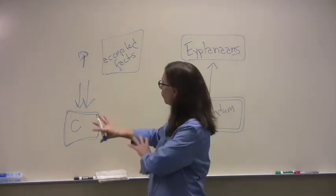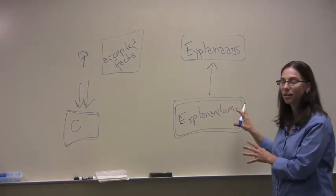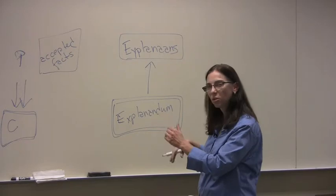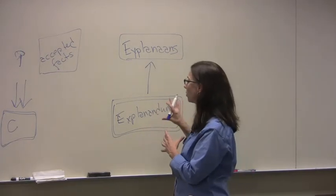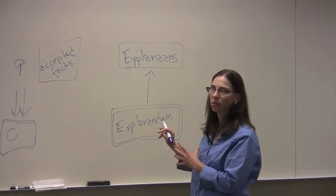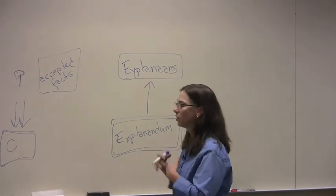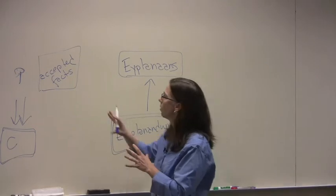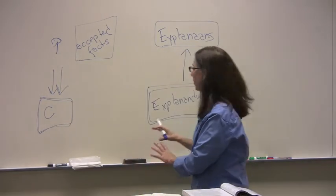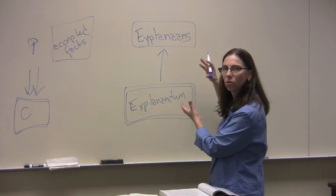One thing, one form that looks a lot like argument but isn't is an explanation, right? An explanation, you also have statements. But an explanation sort of works in the opposite direction. The thing that looks like the conclusion in an explanation is the thing that's more accepted or obvious. And the things that look like premises are the things that you're trying to convince people of. So in an argument, you move from accepted facts toward a conclusion. In an explanation, you start with an accepted fact and you try to move back toward an explanation.